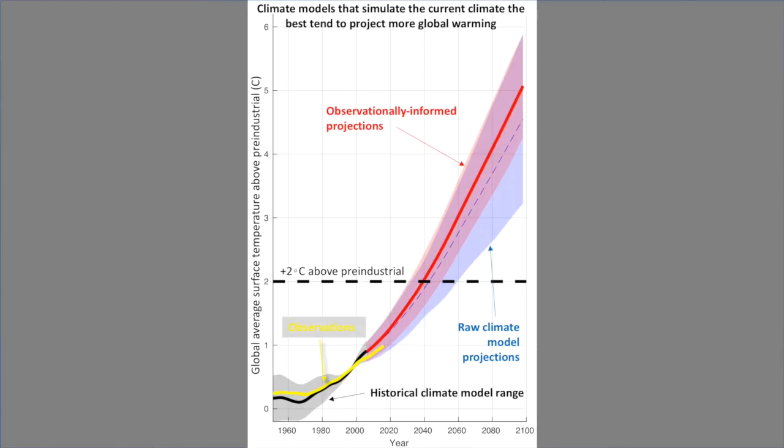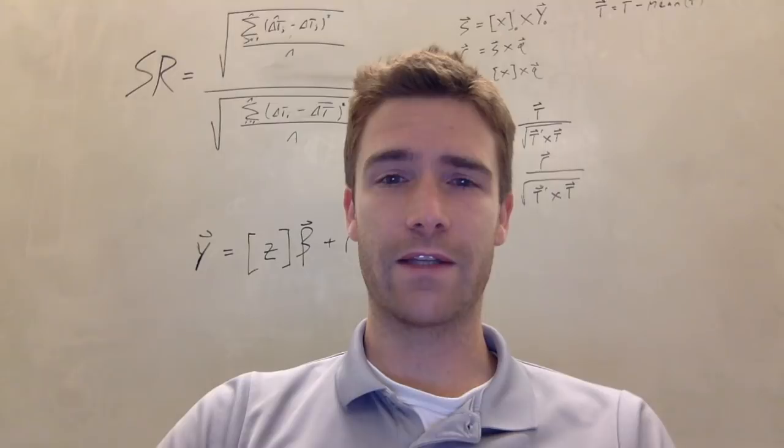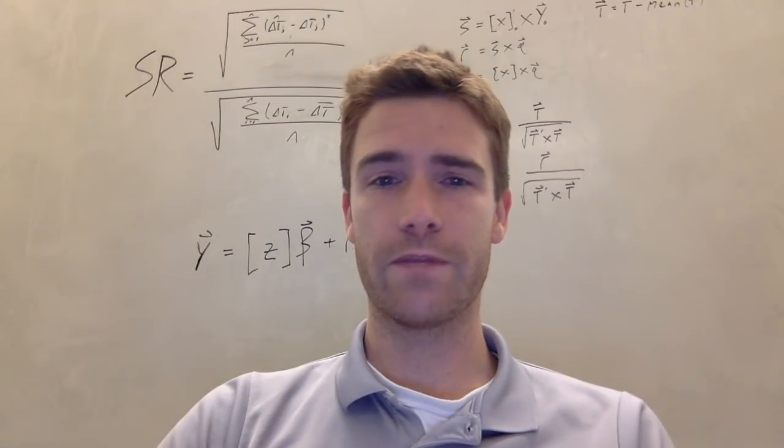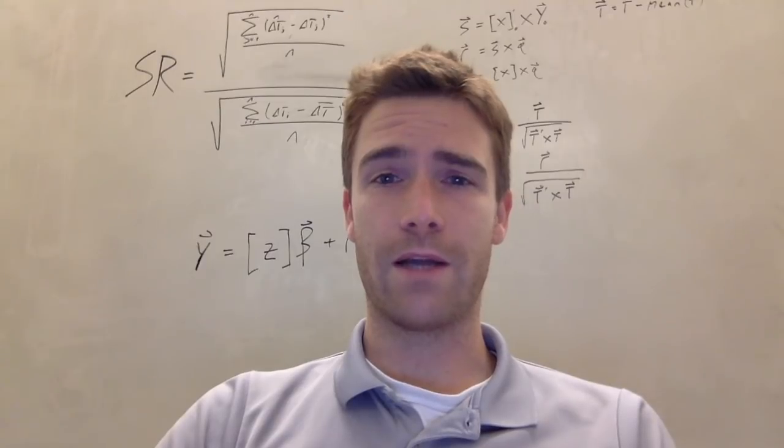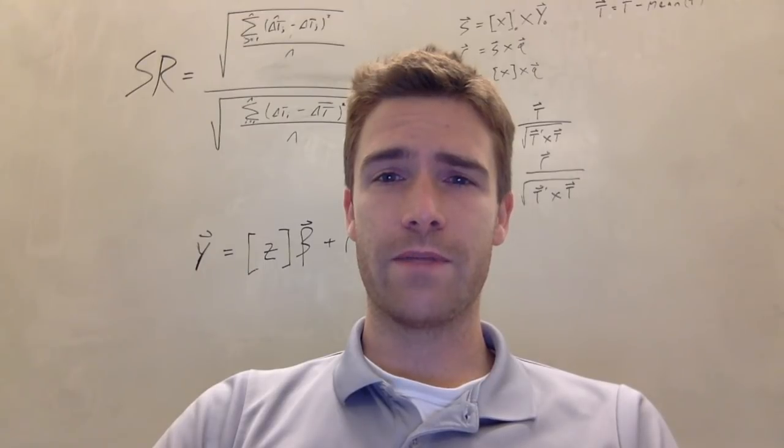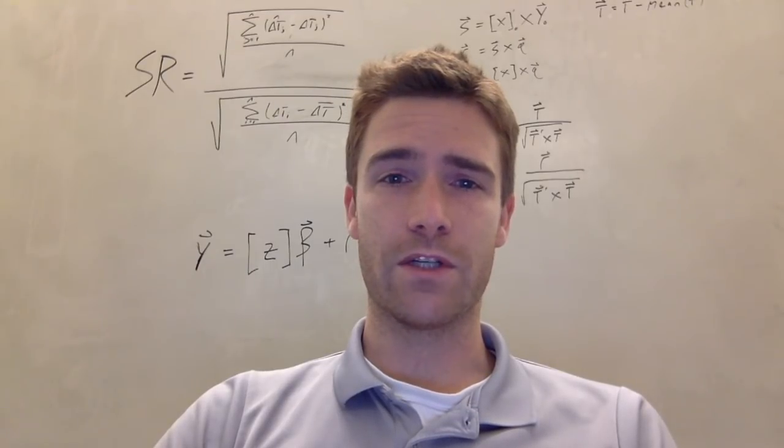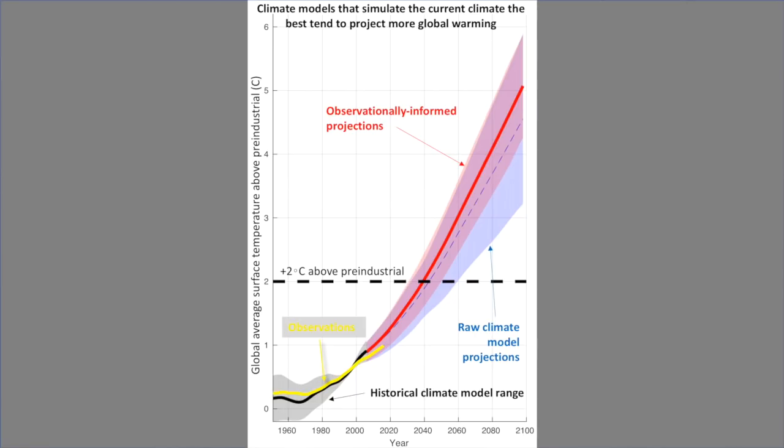So one point that's worth making here is that it's sometimes argued that climate model projected global warming should be taken less seriously due to the fact that climate models are imperfect in their simulation of the current climate. Our study confirms important model observation discrepancies and ample room for climate model improvement. However, we show that models that simulate the recent past the best in terms of Earth's energy budget tend to produce more global warming than the average model over the remainder of the 21st century.